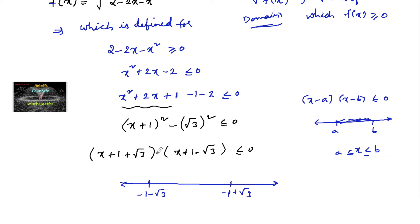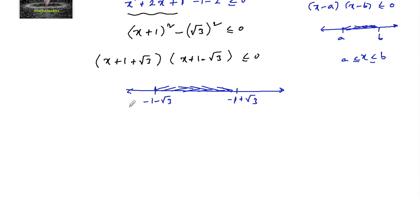So the answer, since it is less than or equals to 0, the solution can be taken between these two numbers. So we can write that, which implies that x lies between minus 1 minus root 3 and minus 1 plus root 3. Close your brackets. So this is the domain of the function.